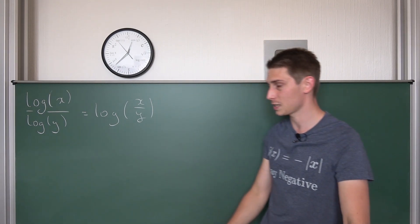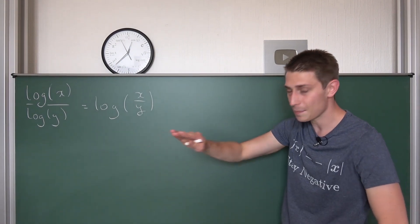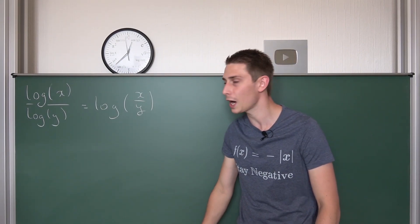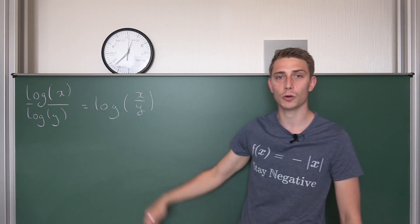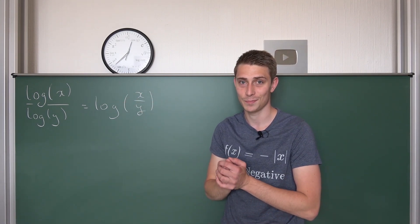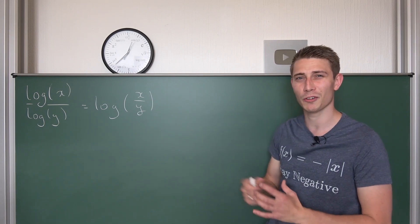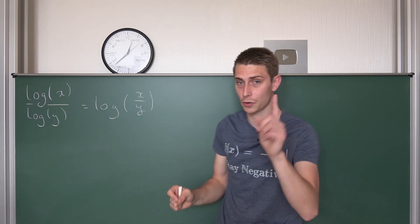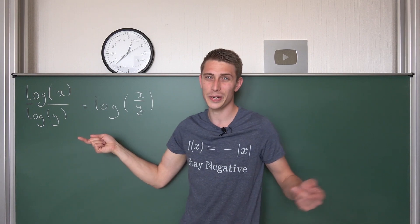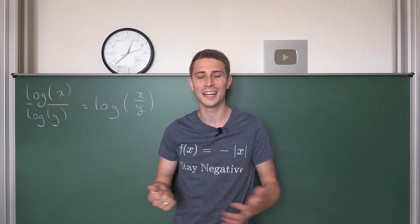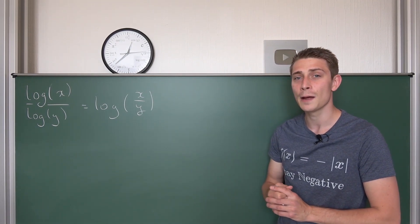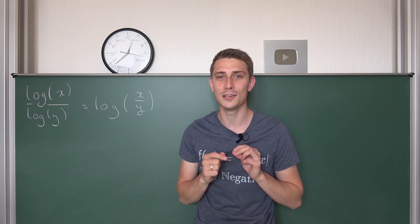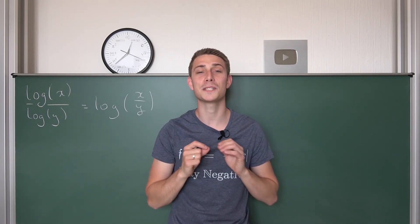We are going to do mathematics done wrong, gone right. We are going to execute the logarithm rules wrong today. Logarithm of x over y — where logarithm is the natural log — is equal to logarithm of x over log of y. Kind of weird, am I right? But there are actually solutions to it, and the solution curves look absolutely fantastic.